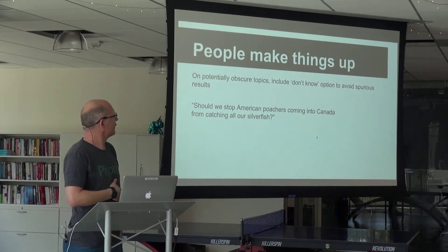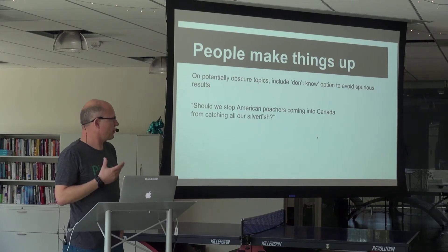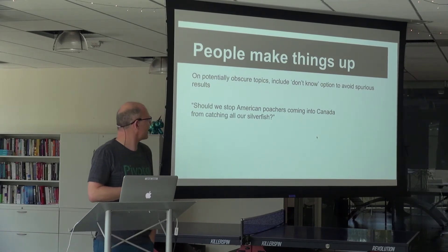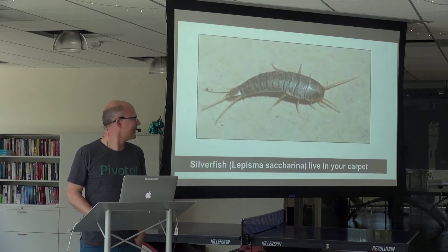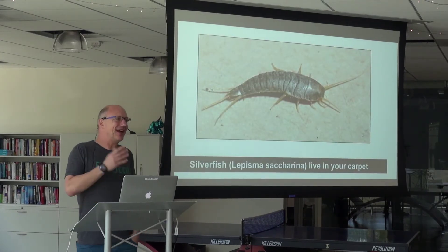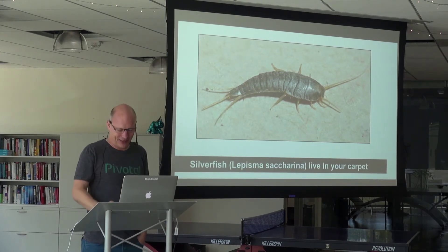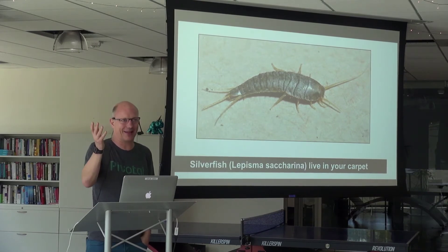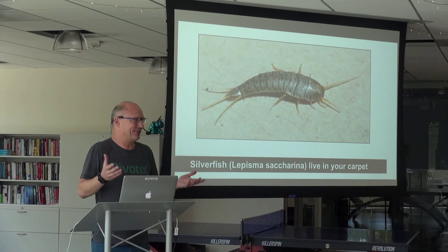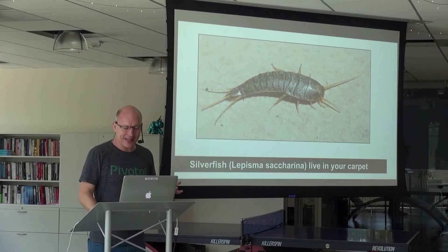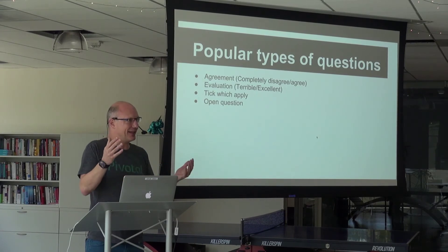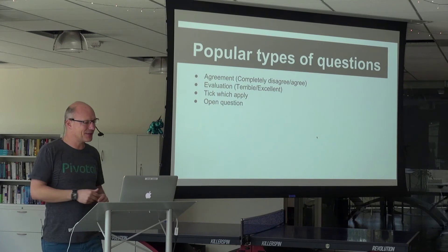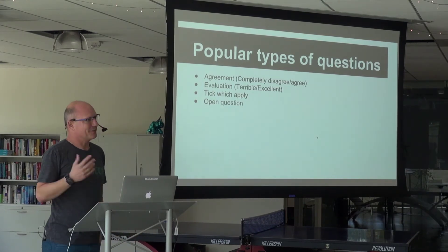Another problem: people make things up. Especially on potentially obscure topics, include a 'don't know' option to avoid stuff like this. 'Should we stop American poachers coming into Canada from catching all our silverfish?' — people said yes to this. Silverfish are insects that live in your carpet. There were interviews with people who said yes and talked about it as if they knew everything. Because the less people know about something, the stronger their opinions are. So be careful about those things.